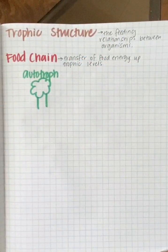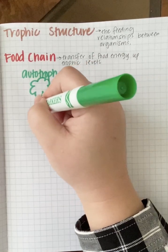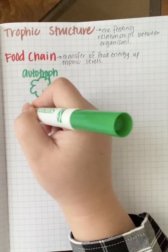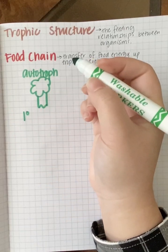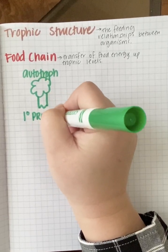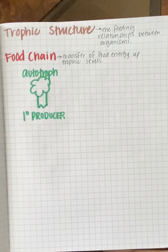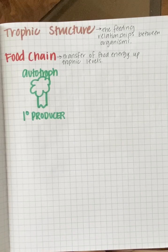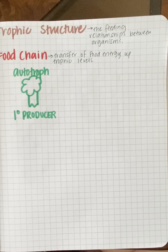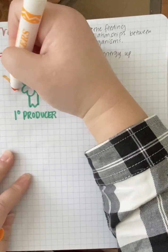We start with our autotroph — I'll draw a tree here. These are also known as our primary producers, denoted as level one. We call all our autotrophs and photosynthetic organisms producers because they harness light energy and produce chemical energy. Keep in mind that all energy entering the food chain started with sunlight.